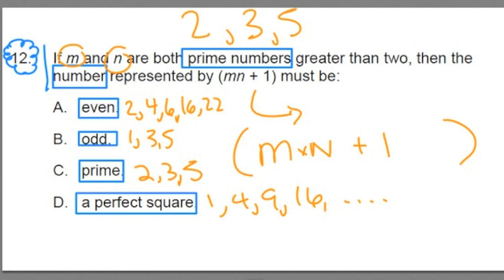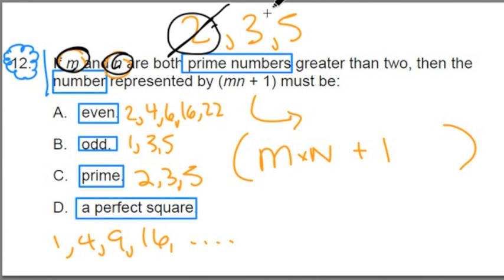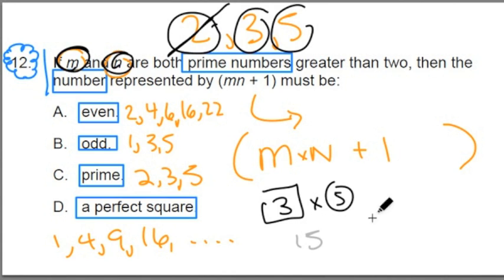Now let's solve this. We're told that m and n are both prime numbers greater than 2. So we're not going to use 2. So let's test out what happens with 3 and 5. If I do 3 times 5, we get 15. And 15 plus 1 gets 16. Is that right? Now 16 is even.